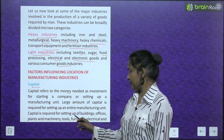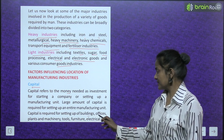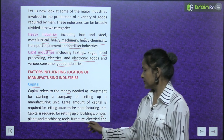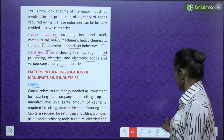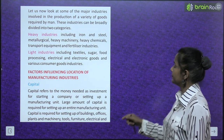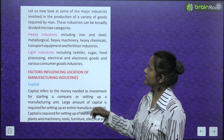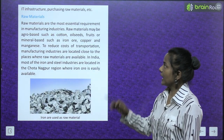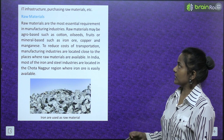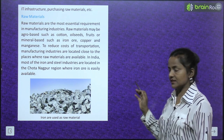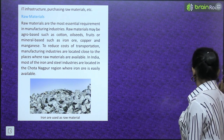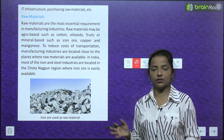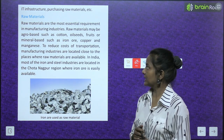Capital is required for setting up buildings, offices, plants and machinery, tools, furniture, electrical and IT infrastructure, purchasing raw materials, etc. Many things are needed to set up any manufacturing unit.